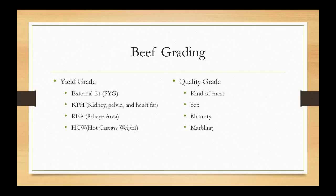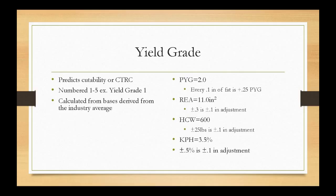Let's start with beef grading. We're going to spend the majority of our time here, looking at yield grading first, followed by quality grading. Yield grading predicts cutability, or closely trimmed retail cuts, and gives you a grade number one through five. USDA yield grade one is a very trim, heavy muscled, high yielding carcass. USDA yield grade five is a fat, light muscled, low yielding carcass. We start with bases derived from industry averages and adjust depending on how muscled or fat the carcass is.